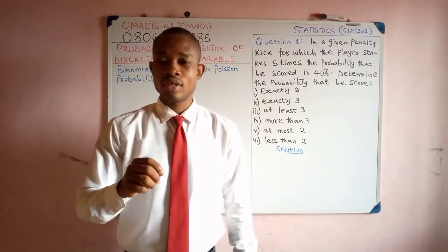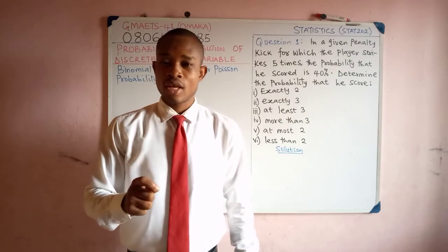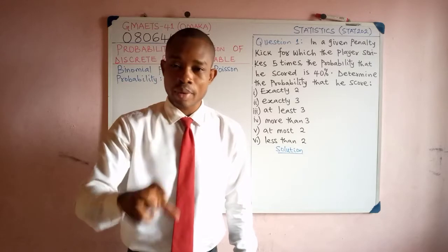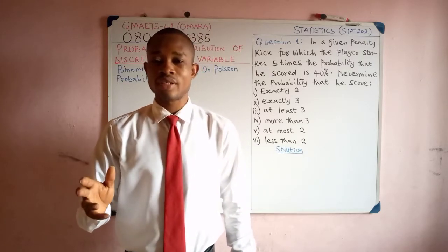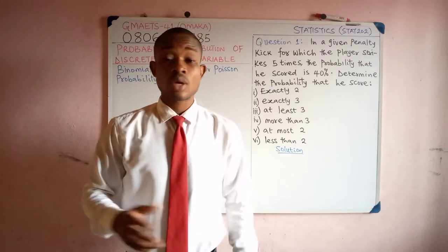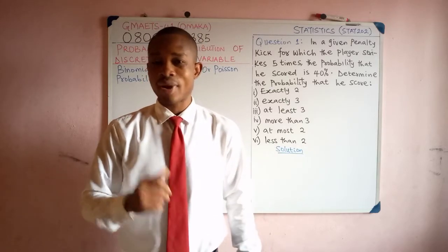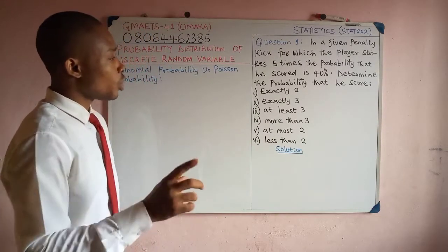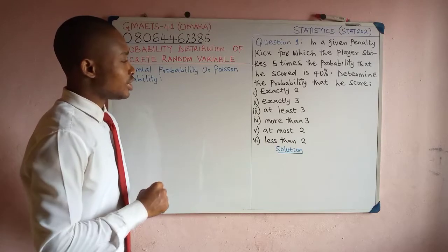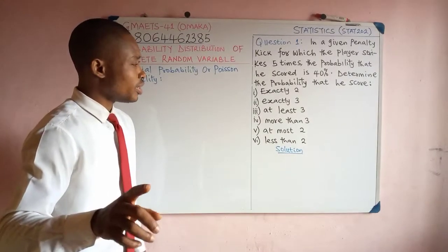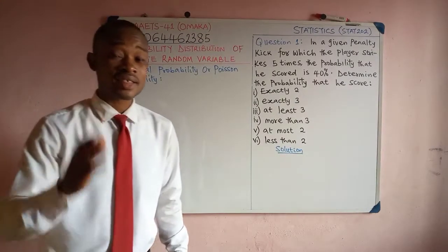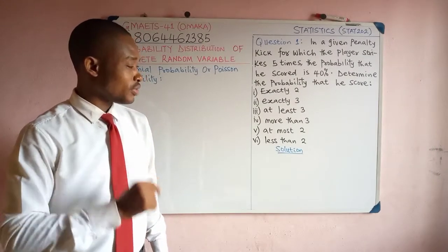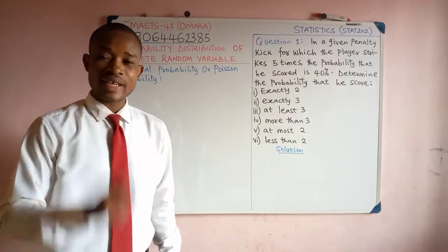In this video we have a question we want to look at. For each question we're going to solve, we'll find out first if the probability is binomial or Poisson's probability, so that we know the formula to apply. The question reads: in a given penalty kick for which the player strikes five times, the probability that he scored is 40%. Determine the probability that he scored exactly two, exactly three, at least three, more than three, at most two, less than two.